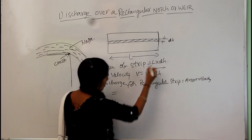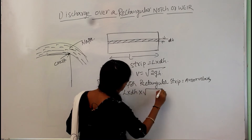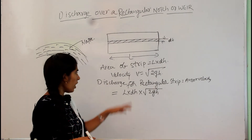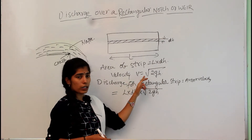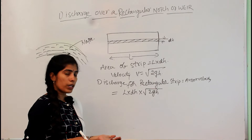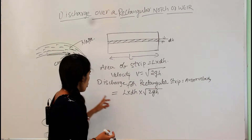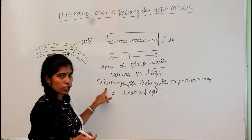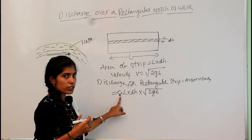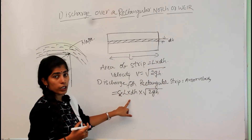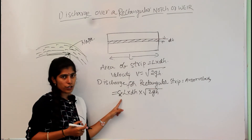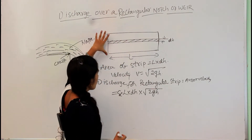So dq equals L·dh·√(2gh). Before finalizing the discharge equation, we need the actual discharge, meaning we need actual area and actual velocity. The formula v = √(2gh) gives theoretical velocity, not actual velocity. To get actual velocity from theoretical velocity we multiply by a coefficient. That is why we multiply by the coefficient of discharge Cd — to obtain the actual discharge rather than the theoretical discharge.